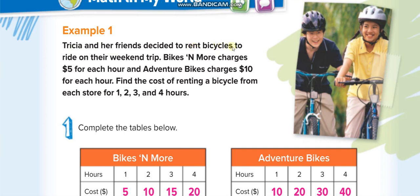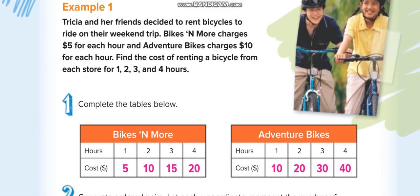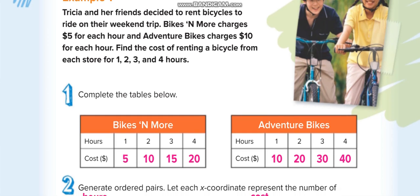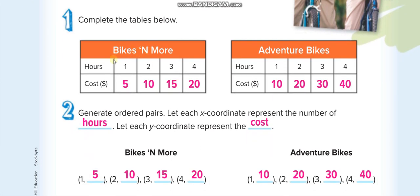For example one, Teresia and her friends decided to rent bicycles for their weekend trip. Bikes and More — that's the company name — charges five dollars for each hour. So one hour is five dollars, two hours ten dollars, three hours fifteen, and four hours twenty. There's another company, Adventure Bikes, charging ten dollars per hour: twenty, thirty, and forty.